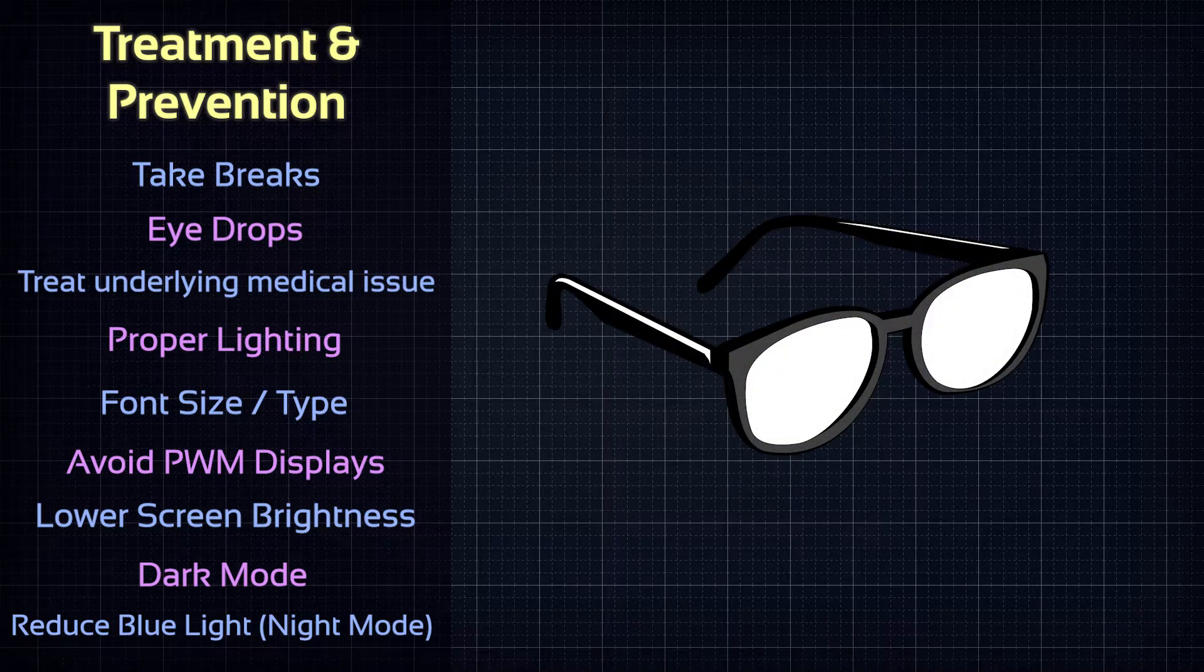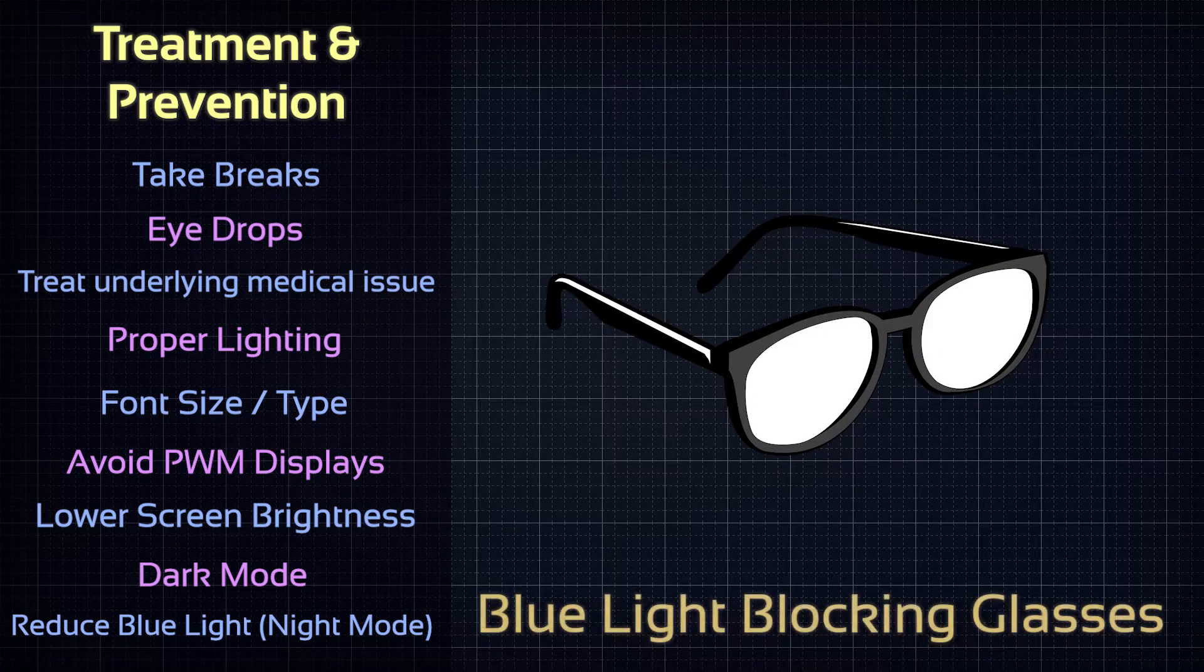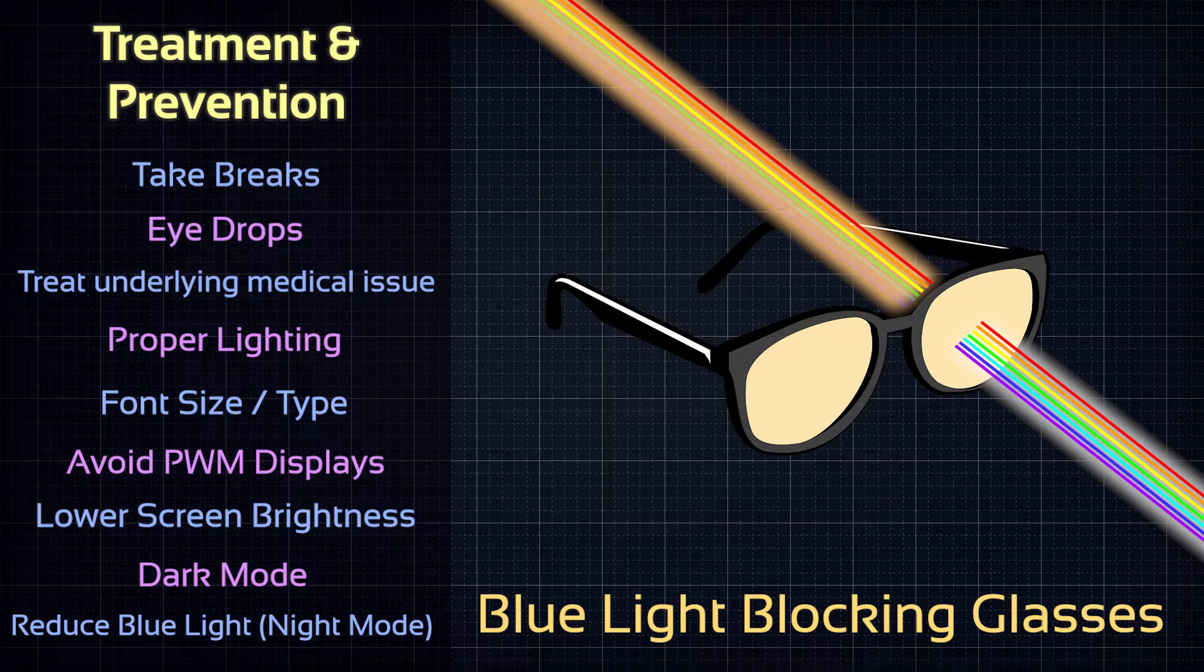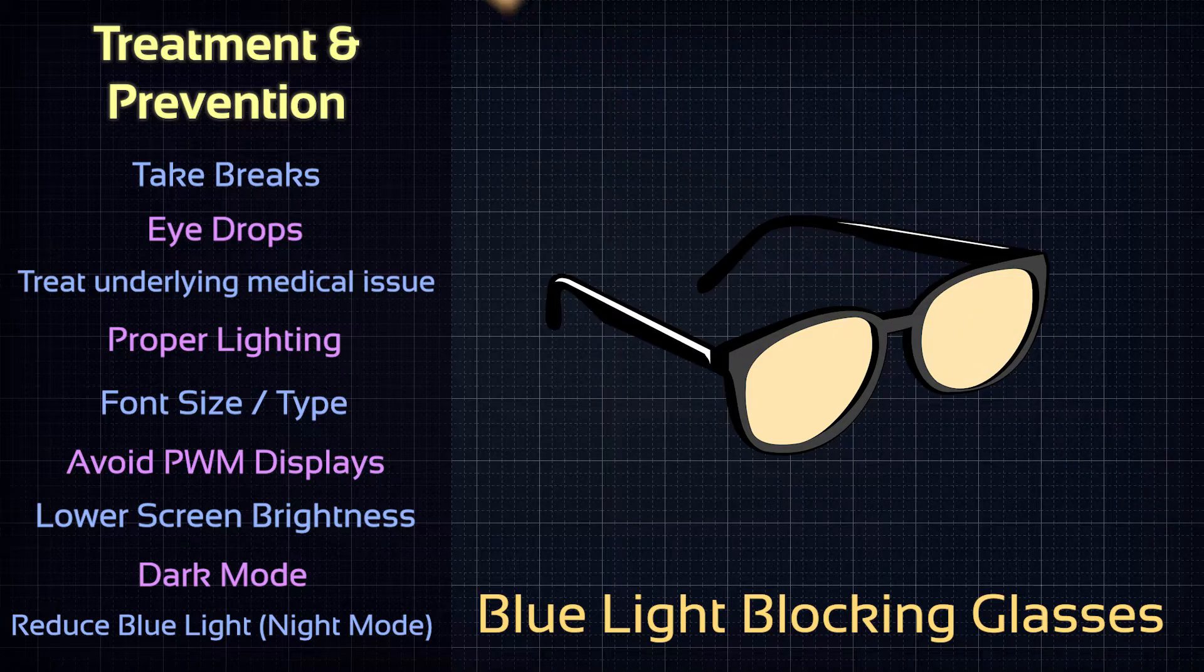Another way to reduce the blue light would be by wearing glasses with blue light blockers. Those filter through all the light rays directed at your eyes, including those from the LED backlighting. Therefore, it is the most effective method, especially those with very strong filters.